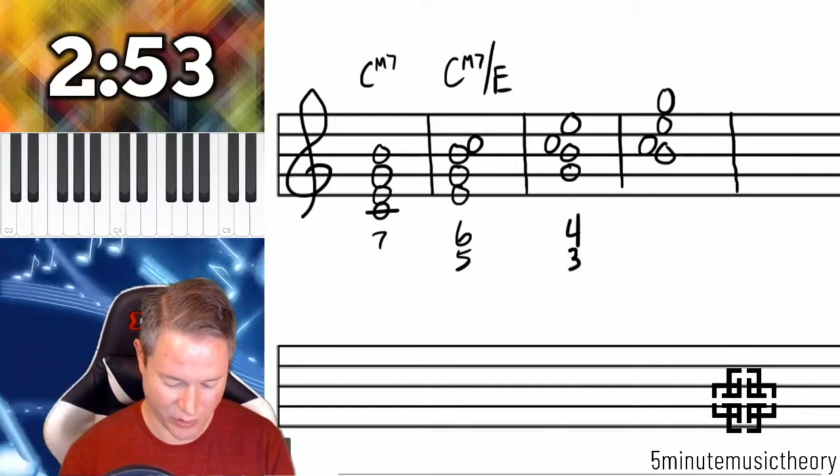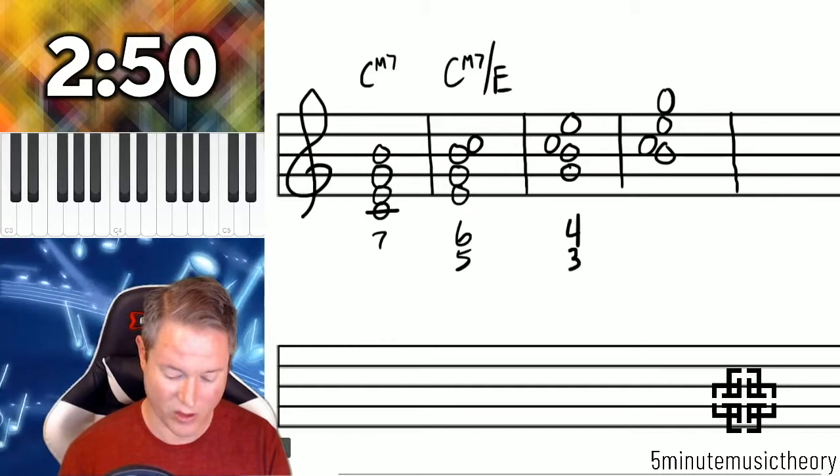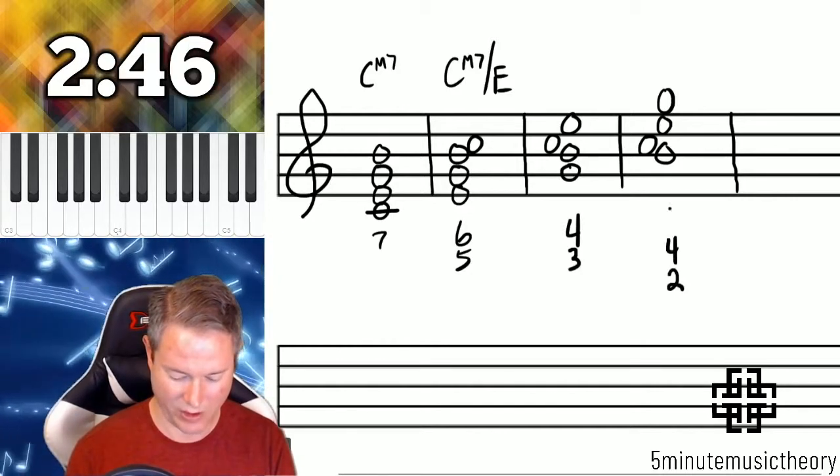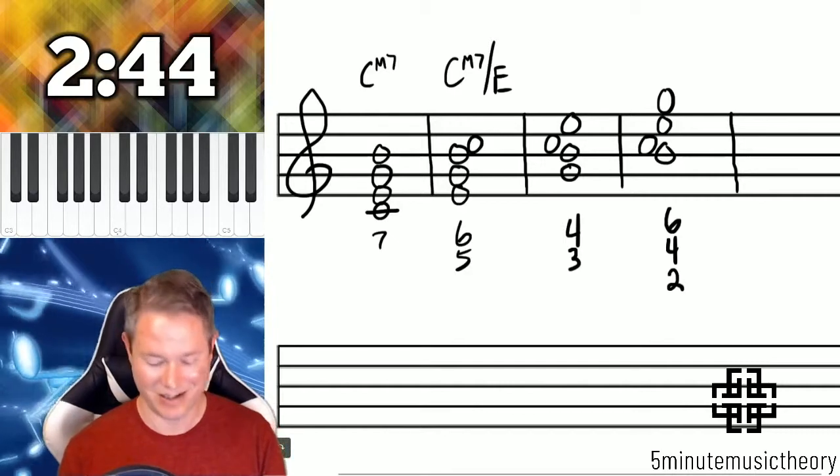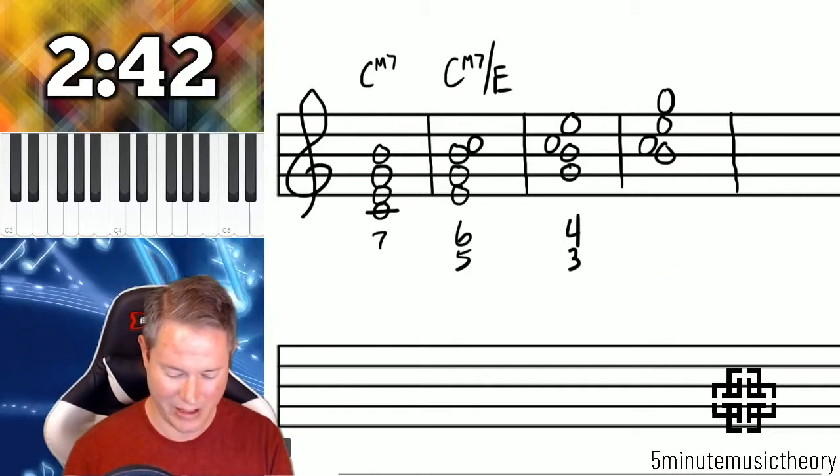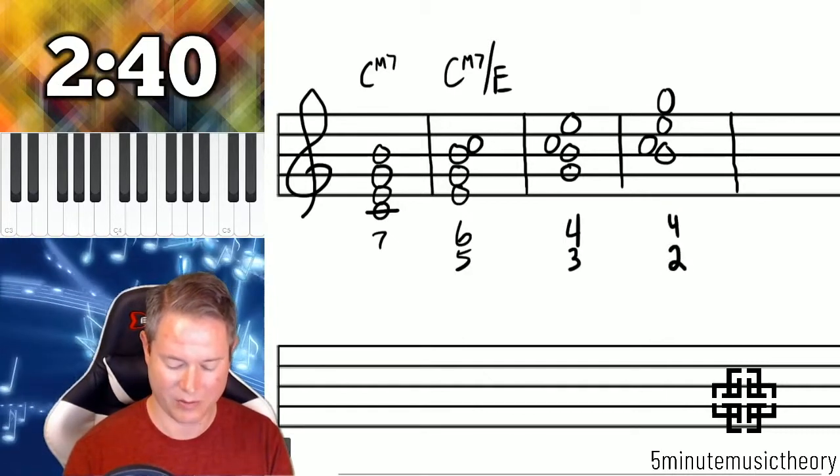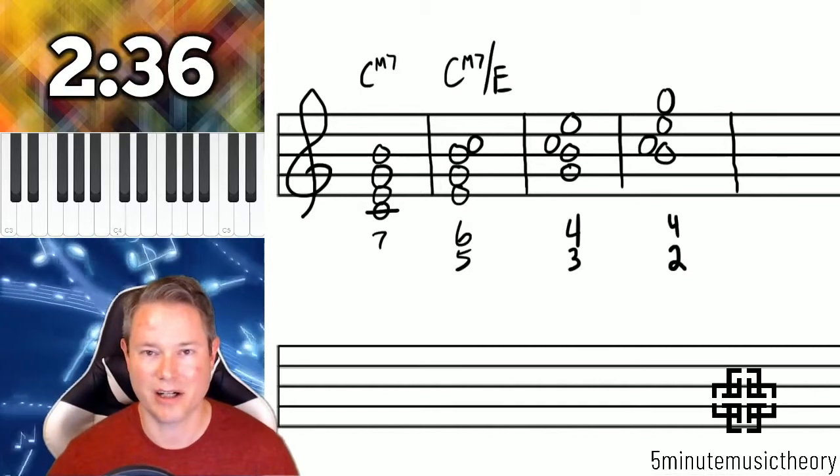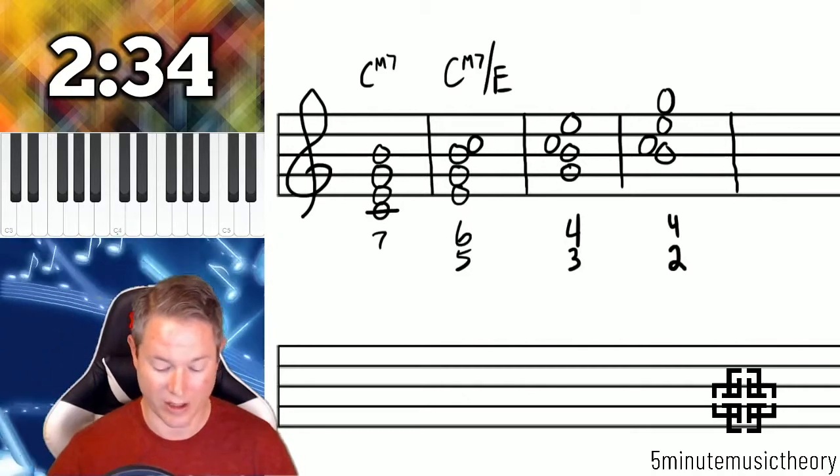And then the last one, the third inversion, which we don't have with triads, but we do have with seventh chords is as shown here. We have a two, we have a four, and we also have a six. Six doesn't mean much because it's in most of the others. So what we do is we get rid of the six and we leave the four two. Four two is the figured bass abbreviation for a third inversion seventh chord.